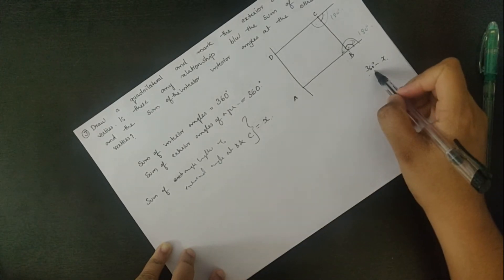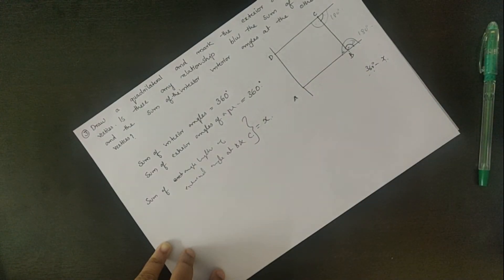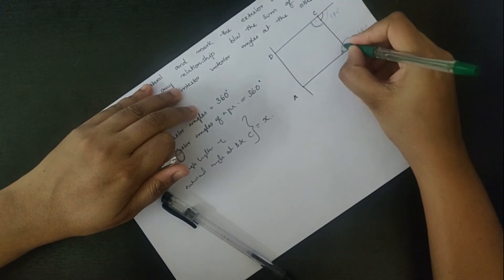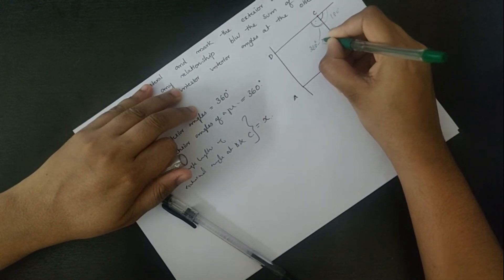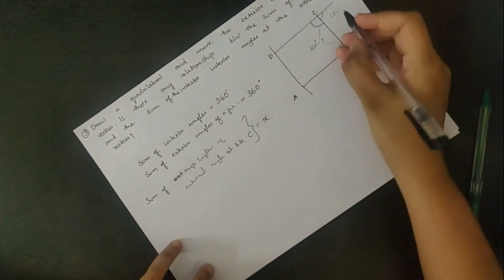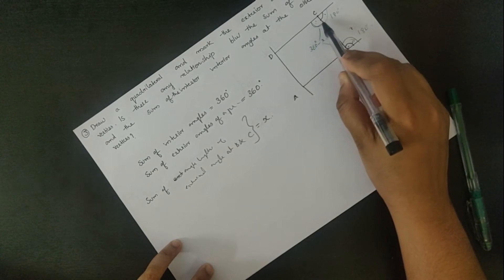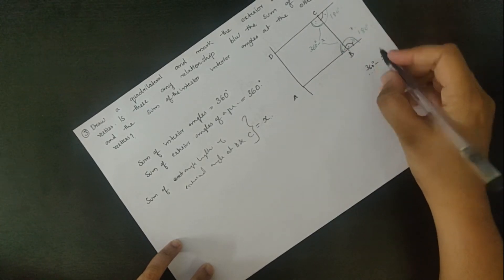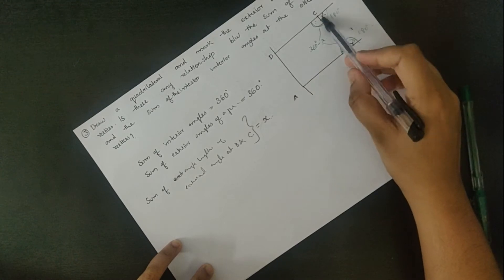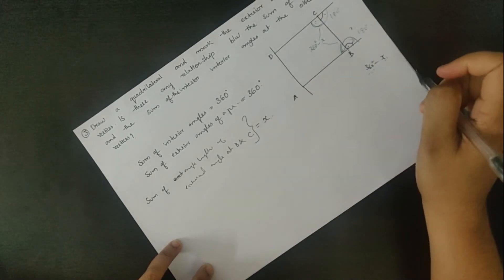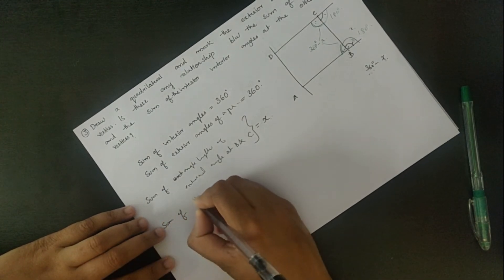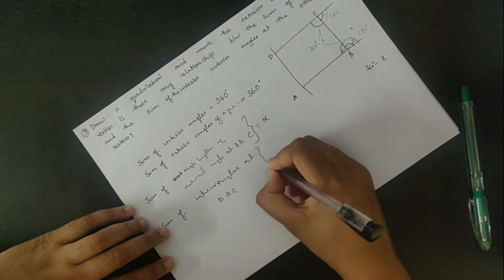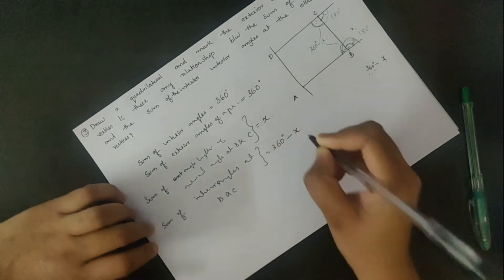The doubt is: since these two sums — exterior angle x and interior angle — are assumed at these two points, they add to 360. So the interior angle is 360 degrees minus the sum of exterior angle x. Then 360 degrees minus x equals the sum of interior angles at B and C.